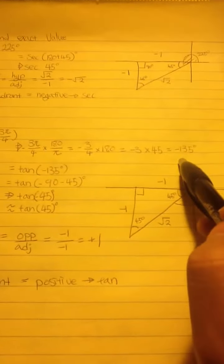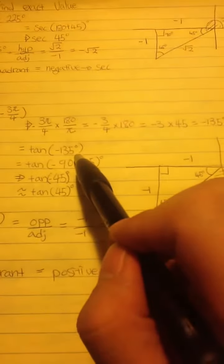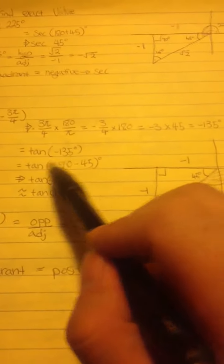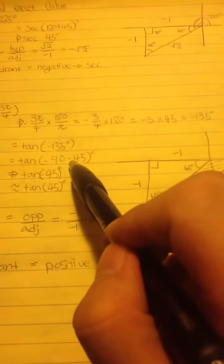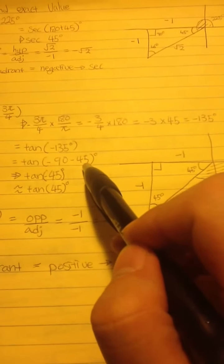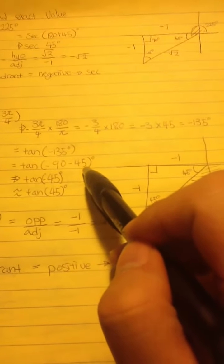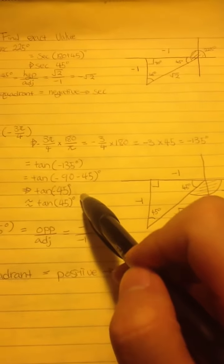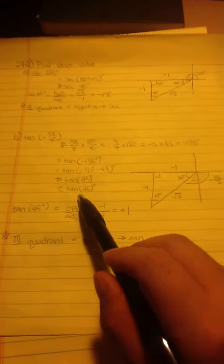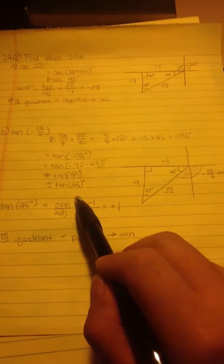And using tangent negative 135 degrees, I found the reference angle, which is tangent negative 90 minus 45 degrees. And here, tangent 45 degrees is our reference angle.